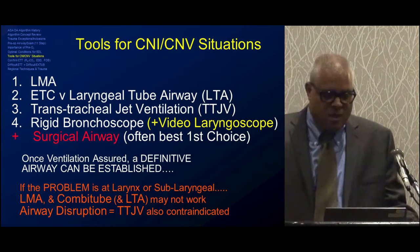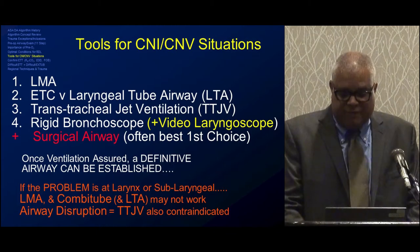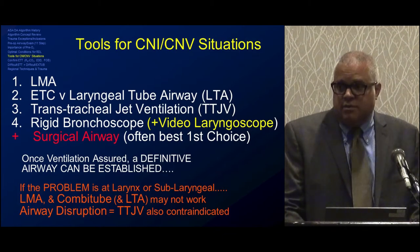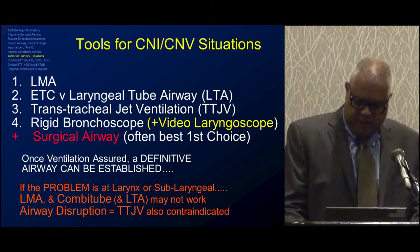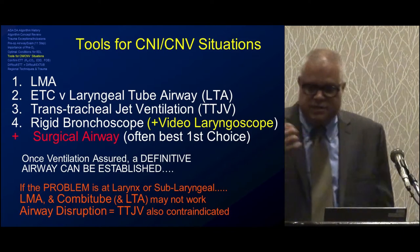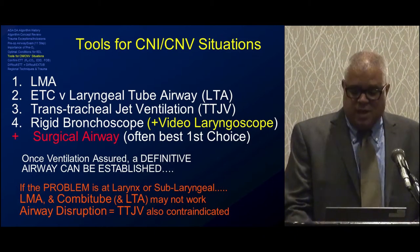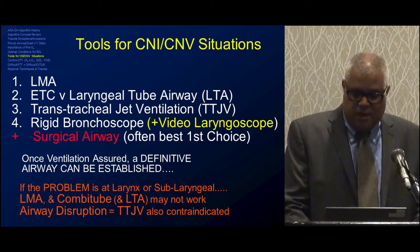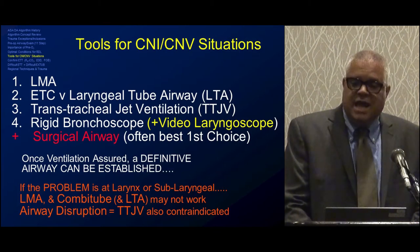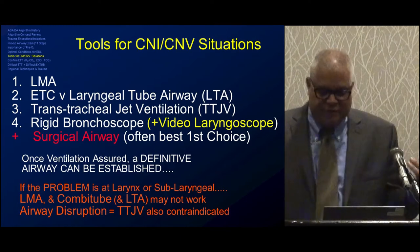When you cannot intubate or cannot ventilate, options include a supraglottic airway—particularly an LMA or combi tube—or transtracheal jet ventilation, which is available in the emergency department and involves placing a needle through the cricothyroid membrane at high pressure. Rigid direct laryngoscopy remains an option, and a surgical airway must always be considered in the trauma room or ICU. We go to surgical airway much earlier and more often in emergency situations than in the operating room.